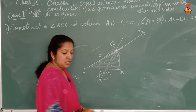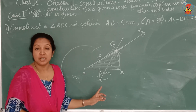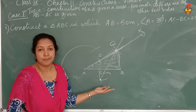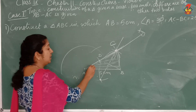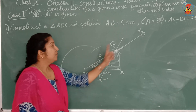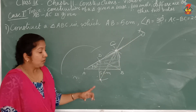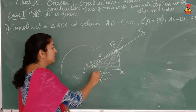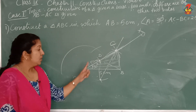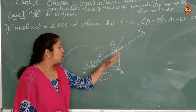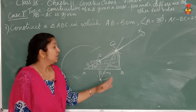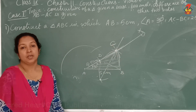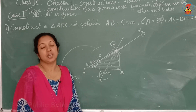Join C and B. Triangle ABC is the required triangle. To summarize: we drew AB of 5 cm, constructed 30 degrees at A, drew ray AX, took 2.5 cm on AX to mark point D, joined B and D, drew the perpendicular bisector of BD which touches AX at C, then joined B and C. Triangle ABC is the required triangle.